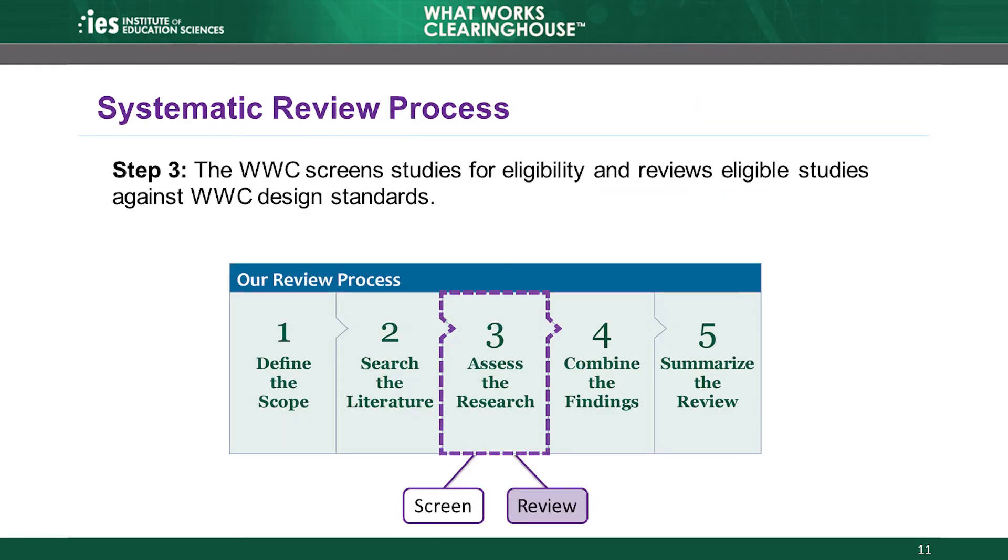After screening the studies identified in the literature search, the WWC reviews eligible studies against the WWC design standards. Reviewers closely examine the methods used in the study, apply the WWC design standards as outlined in the WWC Standards Handbook, and assign one of three ratings to the study: meets WWC design standards without reservations, meets WWC design standards with reservations, or does not meet WWC design standards. Reviewers document their work in a study review guide, which describes the details of the review and the rating assigned.